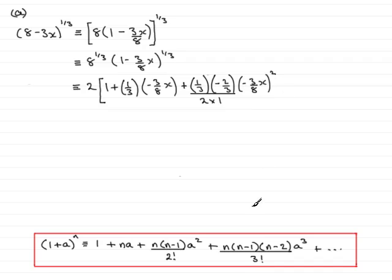Then we have the next term, the final term, plus the power n, which is 1 third, multiplied by 1 less than that, so that's minus 2 thirds. And then, again, 1 less than the minus 2 thirds, which is minus 5 thirds. And that's all over 3 factorial, or 3 times 2 times 1.